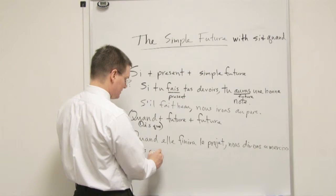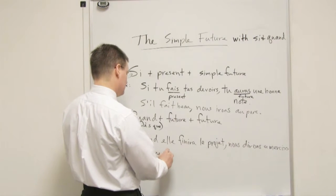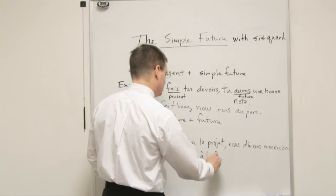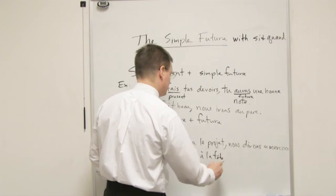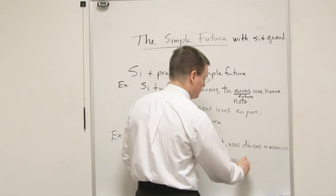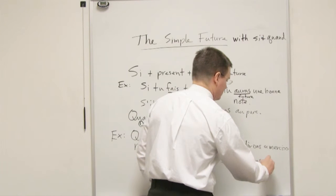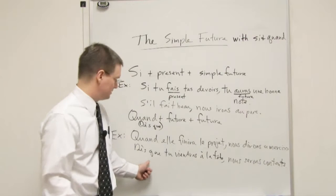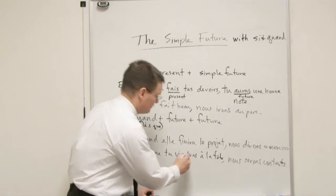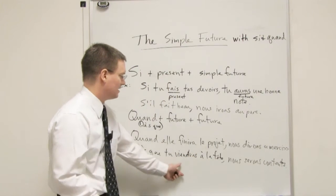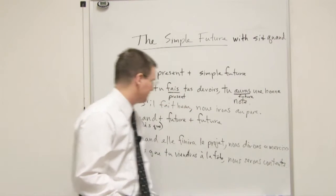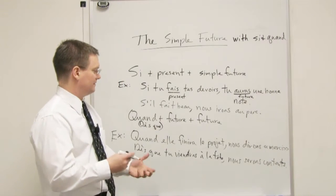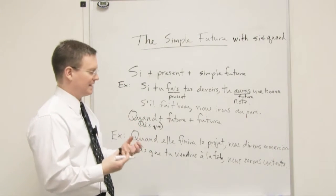So, another example. Dès que tu viendras à la fête, nous serons contents. As soon as you arrive, this is the verb venir, by the way. Venir viendras à la fête, nous serons contents. As soon as you come to the party, we will be happy. So when you arrive, then we'll see you, then we'll be happy.